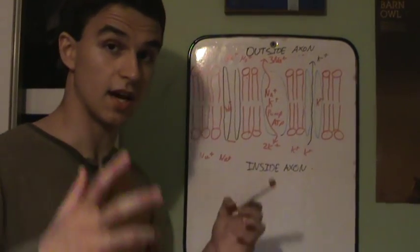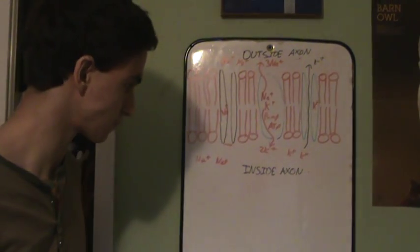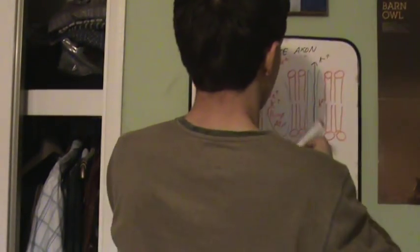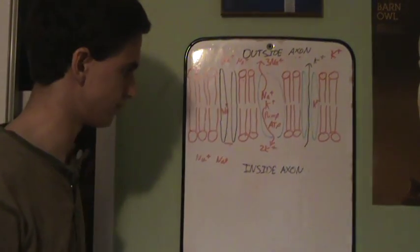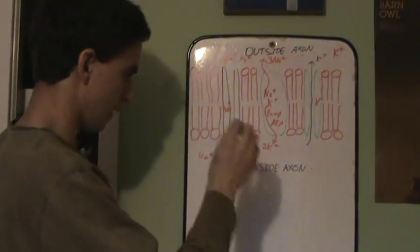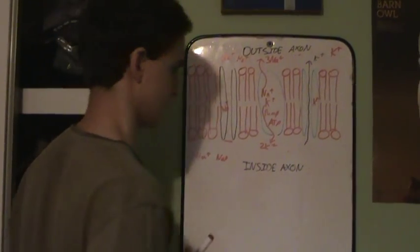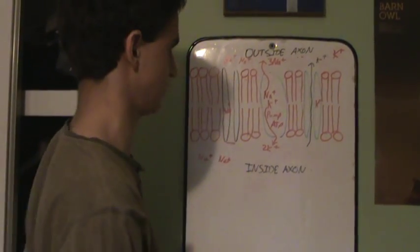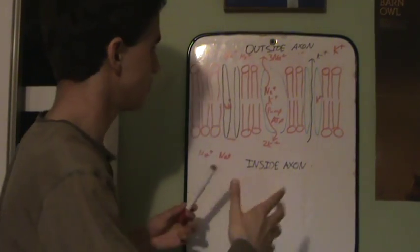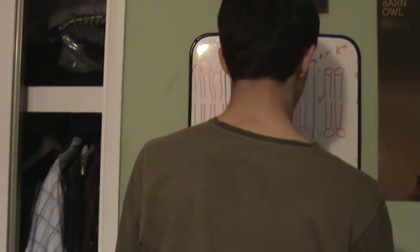As potassium ions are positive, that'll make the inside of this axon slightly more negative again. Now as more and more diffuse out, the inside of the axon becomes even more and more negative. So more of these are leaving outside of the axon there. In fact they leave so quickly there's a temporary overshoot. The inside of the axon gets slightly more negative than it should do. That's called hyperpolarisation. It gets to about, I don't know, minus 90 millivolts or so much, because so much potassium is leaving and no sodium is entering. But then due to the actions of the sodium-potassium pump etc., we return to our resting potential of minus 70 millivolts.